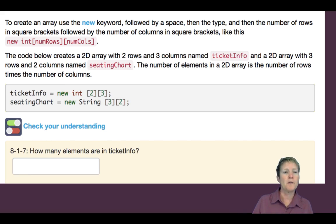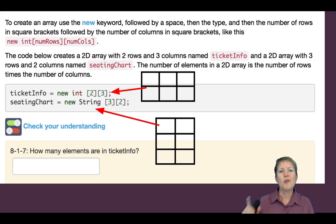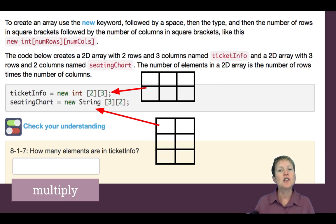But this one could use a few more visuals, I think, to really make it clear. So let's say we declare an element or an array, a 2D array called ticketInfo of new integers 2, 3, and a seatingChart of new strings 3, 2. How are those different? Well, here's the images you'd want to see. ticketInfo is going to be two rows and three columns, and seatingChart is going to be three rows and two columns. Either way, they've actually both have the same number of elements. And they say, how many elements are in ticketInfo? The key is you multiply two times three, six. And again, if you're drawing the boxes, it's pretty obvious.